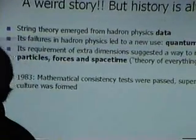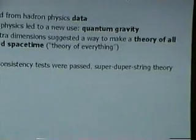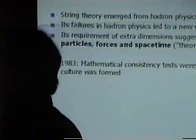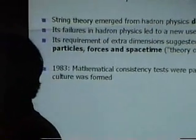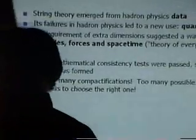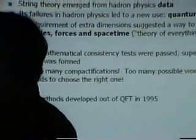By 1983, when mathematical consistency tests were passed, people got very excited and this culture of super duper string theorists formed. People who believed that that theory was going to give them the answer and they found the right theory and it was no longer necessary to ask the experimentalists for more help. Experimentalists were just going to confirm that the theory was right. It was just a matter of time once they did enough calculations. But the problem was there were too many compactifications, too many possible worlds. They needed better techniques to choose the right one. They got the new techniques in 1995.